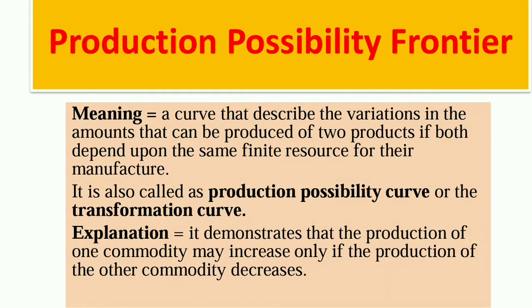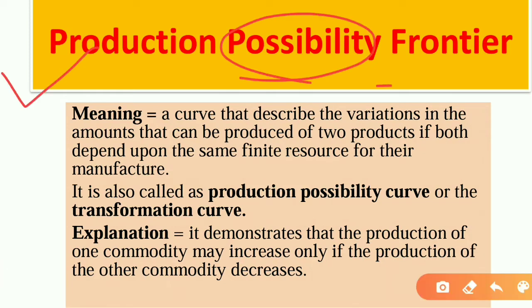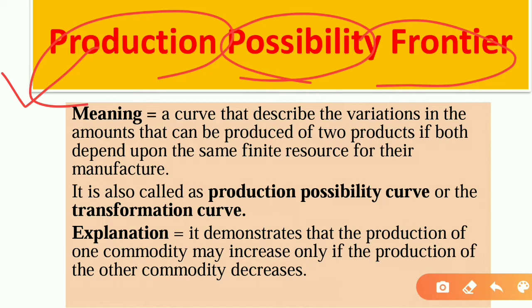Today we will see the production possibility curve. This concept is given in 12th standard microeconomic NCRT, in the first chapter, that is 'Introduction to Microeconomics.'